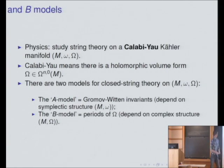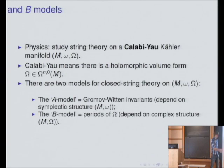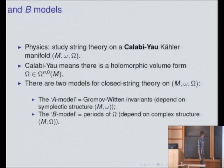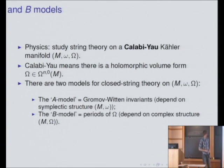We've got the A model, which is Gromov-Witten invariants. These depend on the symplectic structure — even though it looked like they depended on the complex structure because we were talking about holomorphic maps from a Riemann surface into a manifold, they're actually stable under deformations of the complex structure. So it actually really depends on the symplectic form. And you've got the B model, encoded in periods of the holomorphic volume form, which really is a complex invariant.